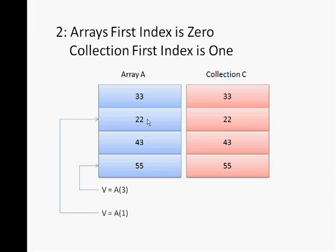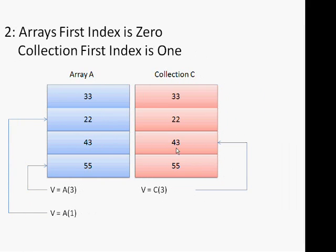Now in the collection it's different. If you write the same statement, you will find that v equals c of 3 would actually point to 43. And v equals c of 1 will actually point to the value 33. That's because the first element index is 1. So this is the second difference.